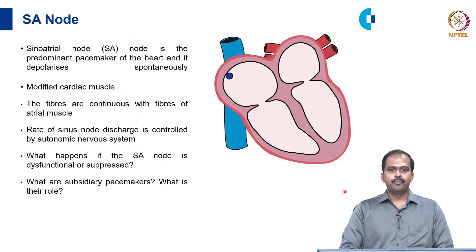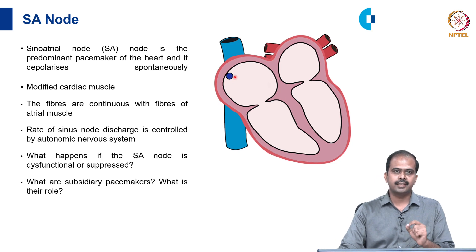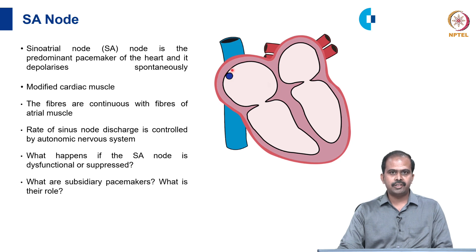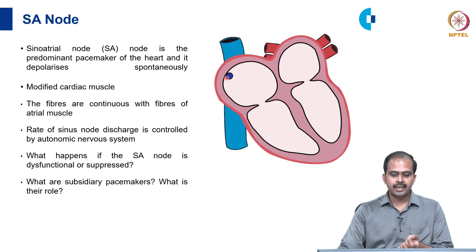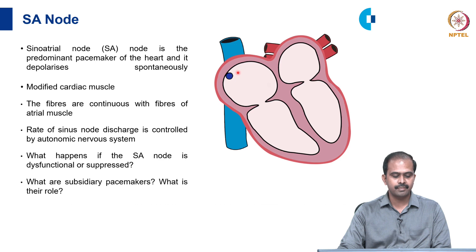What is an arrhythmia? An abnormality in cardiac rhythm is called an arrhythmia. The SA node is the predominant pacemaker of the heart and it depolarizes spontaneously. It is a modified cardiac muscle situated at the superior part of the lateral wall of the right atrium. The fibers of the SA node are continuous with fibers of the atrial muscle, so once impulses are generated, they spread rapidly through the atrial muscle.